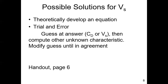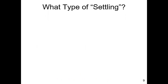From the handout page six, entitled 'Drag on Three-Dimensional Objects,' specifically about drag on spheres — you might open your handout to that page. We're talking about settling where the system is at steady state, at terminal or terminal settling velocity. When true, drag equals weight. If you're not at terminal velocity, the particle is accelerating and the sum of forces is mass times acceleration. It's convenient to use the terminal velocity or steady-state system because the sum of forces in the vertical direction equals zero.